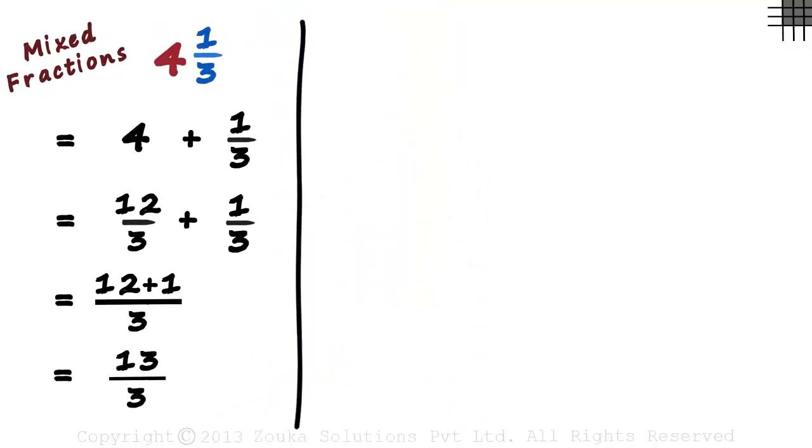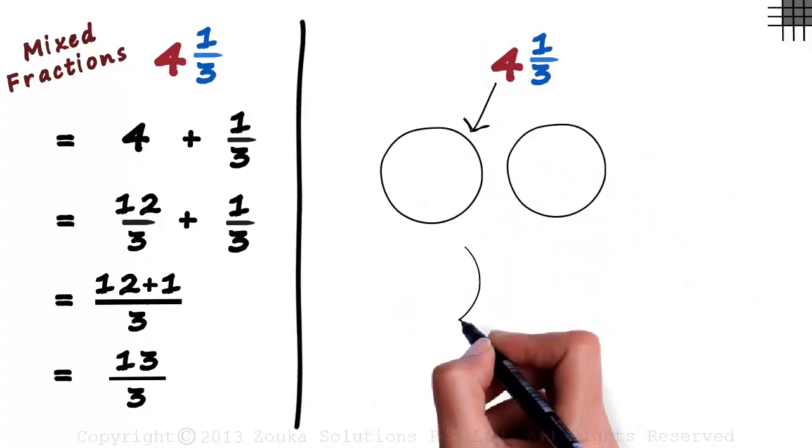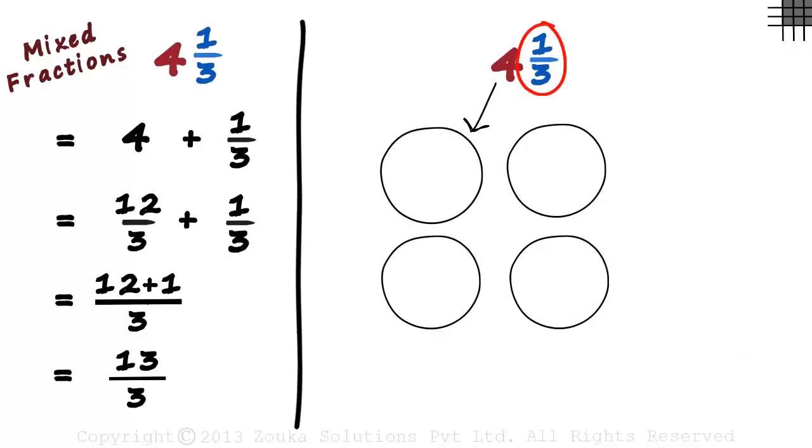We are looking at the mixed fraction 4 1 by 3. We represent this 4 with 4 circles of the same size. What about the fractional part, 1 by 3?